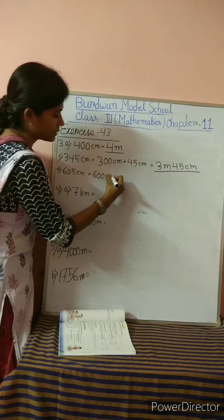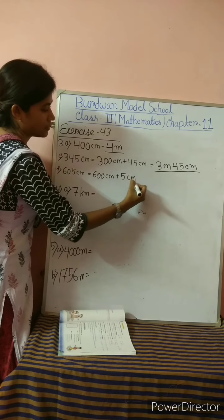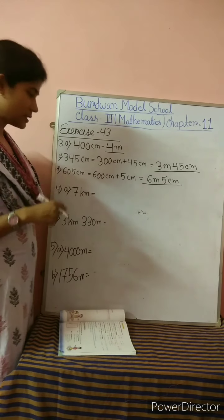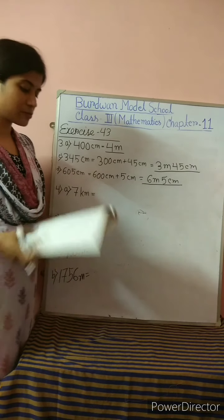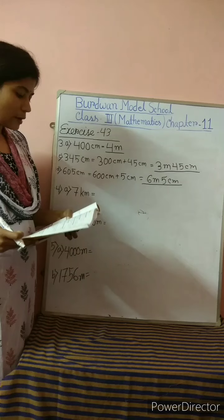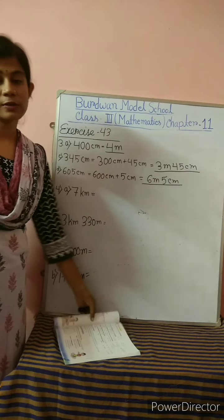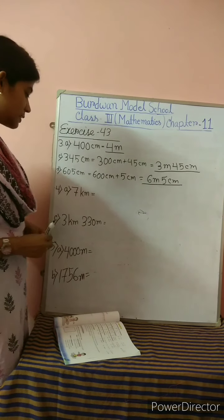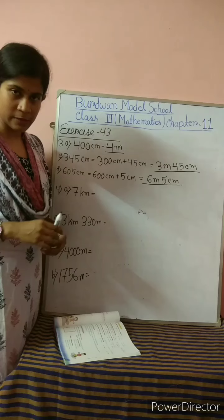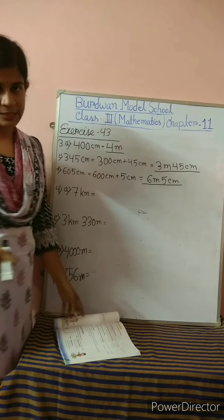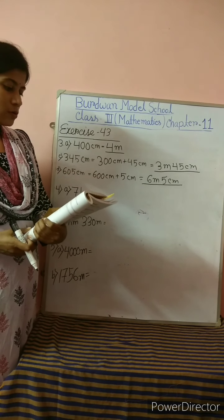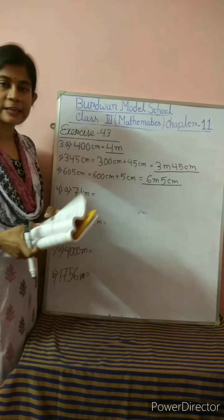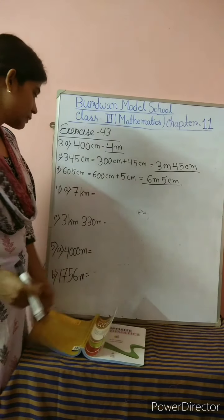Take 345 centimeters. We can write this as 300 centimeters plus 45 centimeters. Whenever you add 300 centimeters and 45 centimeters, you get 345 centimeters. We know that 300 centimeters equals 3 meters, and 45 centimeters is less than 100, so we keep it as is. Therefore, 345 centimeters equals 3 meters 45 centimeters.